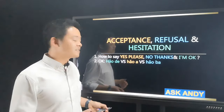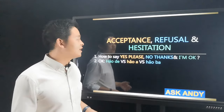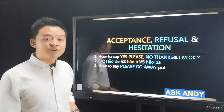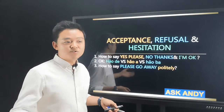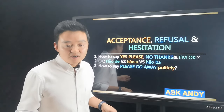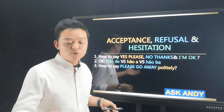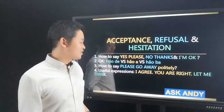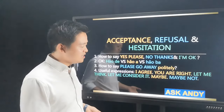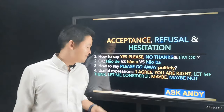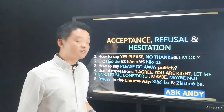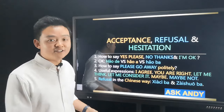Number two: 好的 vs 好啊 vs 好吧 — you're going to hear three different 'okay' in Chinese. What's the difference between them? Number three: how to say please go away politely, like to a shopkeeper who is staring at you when you're doing window shopping, or to a waiter or waitress staring at you while you're reading the menu. Number four: useful expressions — I agree, you're right, let me think, let me consider it, maybe, maybe not. Number five: refusal in the Chinese way — 下次吧 and 再说吧. Those two expressions are typical refusal in the Chinese way.